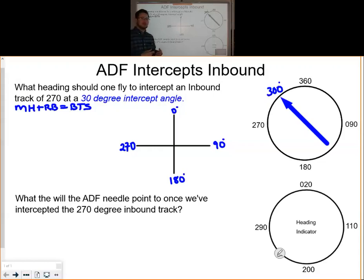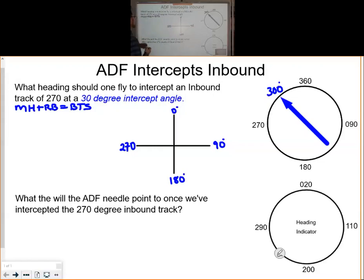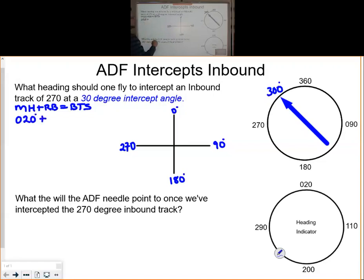The first thing you always want to do is calculate where we are referenced to the station, and we do that by using the following formula: the magnetic heading plus relative bearing equals the bearing to the station. Our magnetic heading in this example is 020 degrees, and we add it to our relative bearing of 300 degrees, so our bearing to the station is 320 degrees.